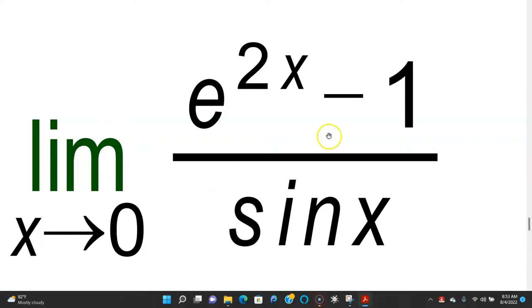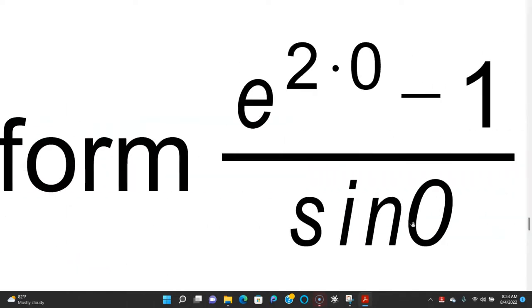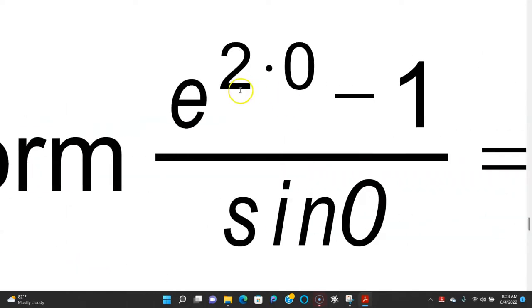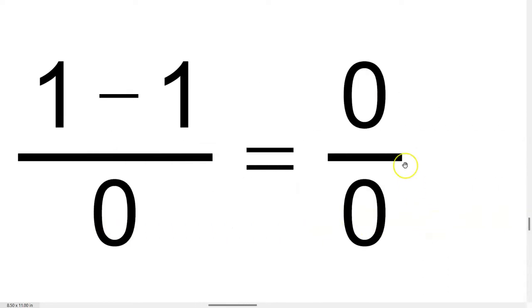You have the limit of x approaches 0 of e to the 2x minus 1 over sin x. Now this is of a particular form. If you replace x with 0, you have e to the 2 times 0 minus 1 over sin 0. That's going to give you 1 minus 1 over 0, which in the end is 0 over 0, and that's undefined.